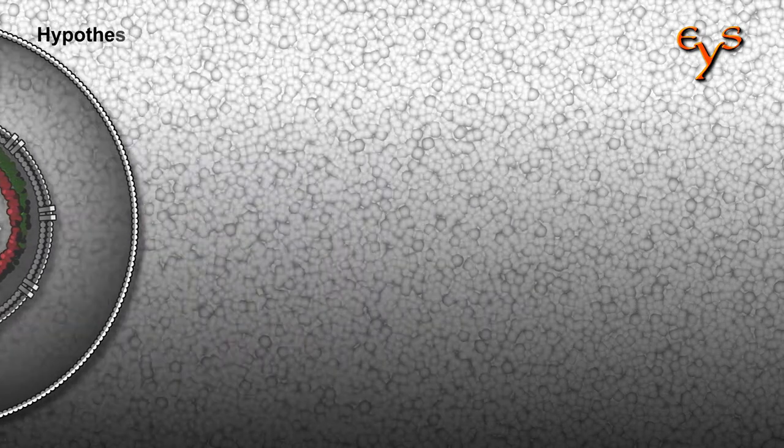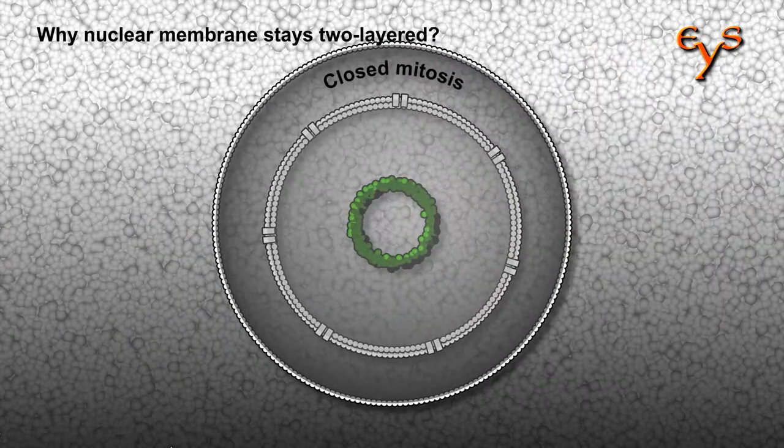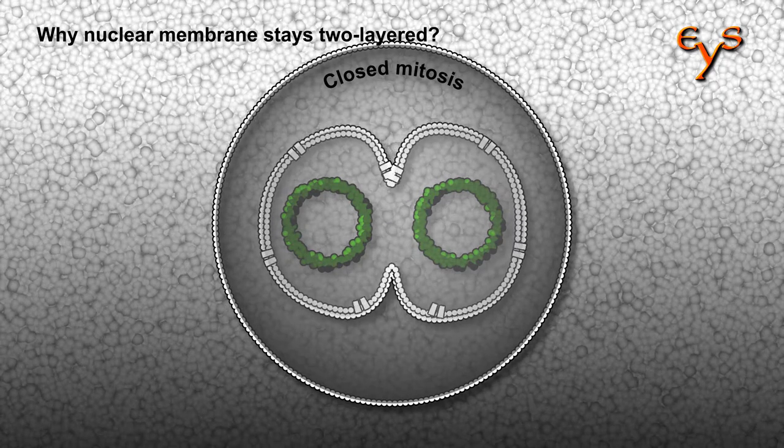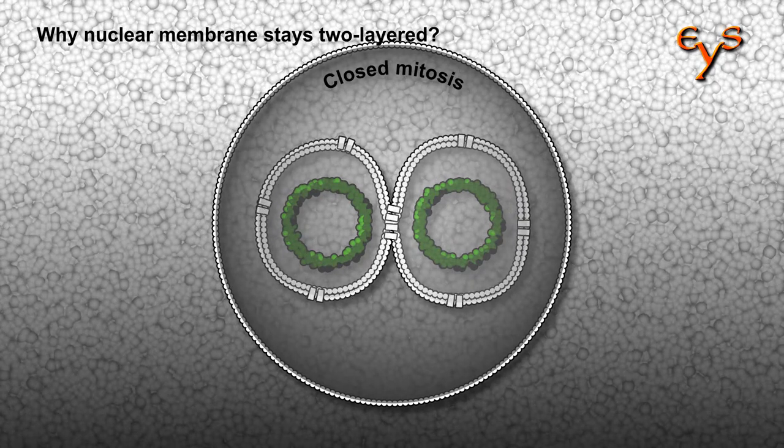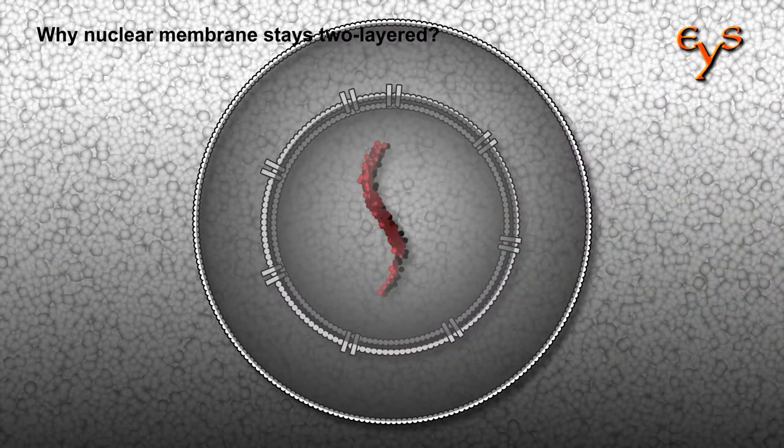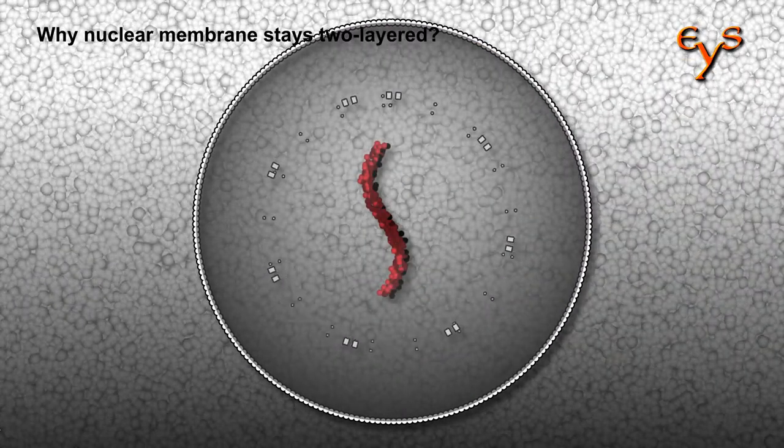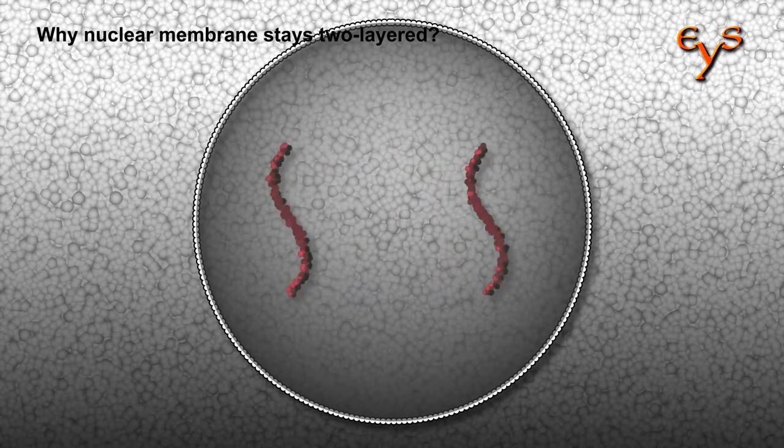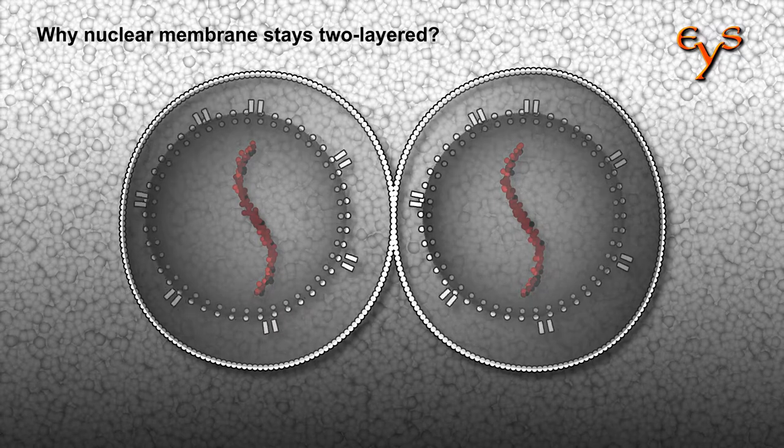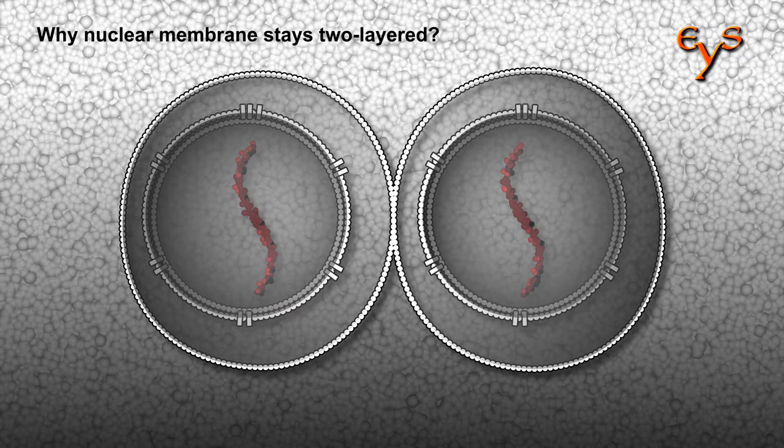Talking of the two-layered membrane, with an exception of some ultra-orthodox cells with their nucleuses dividing as separate cells inside a host cell, most eukaryote cells undergo open mitosis in the course of which nuclear membrane disintegrates and then reassembles around chromosomes in daughter cells. The question is why and how nuclear membrane recreates itself two-layered again after disintegration.